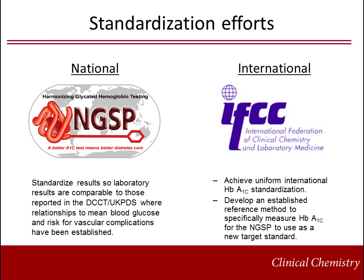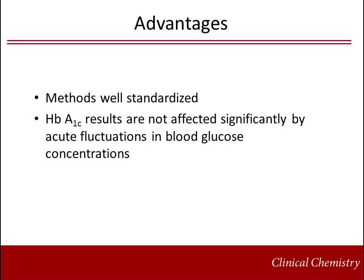For more details, please see the Pearl of Laboratory Medicine on the diagnosis of diabetes. In addition to the standardization efforts of hemoglobin A1C measurement, a main advantage to hemoglobin A1C testing as a measure of average glycemia is that the results are not affected significantly by acute fluctuations in blood glucose concentrations, such as those occurring with illness or after meals. The main advantage to hemoglobin A1C testing for diagnosis is that the results do not require fasting.